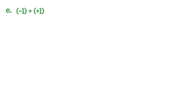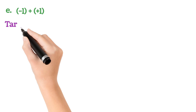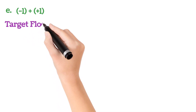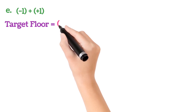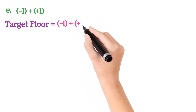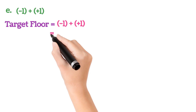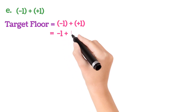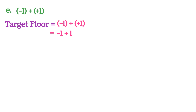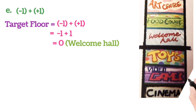Sum number E: minus 1 plus (plus 1). Our target floor — at present we are in the basement, that is minus 1. We place plus 1 inside the lift. Remove the bracket: minus 1 and plus 1. Same number, opposite sign — we cancel them and get 0. We reached the ground floor, and in the ground floor there is the welcome hall.